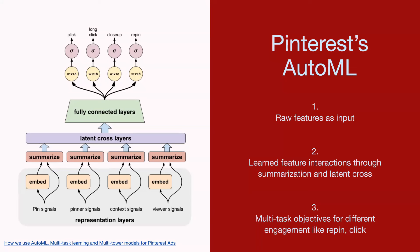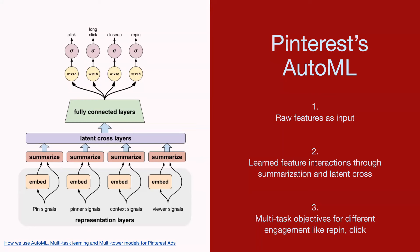Neural networks can handle multitasking across objectives because they are universal function approximators — they can look at history and try to predict the future. The first component of this model is the representation layer: in neural networks, defining and normalizing features plays a crucial role. For numerical features, you want to normalize them using clipping or z-score normalization. For categorical features, you can learn embeddings or define vocabularies. There's also a summarization layer where users could explicitly define which features should be learned together, like a category vector for a user or a pin.